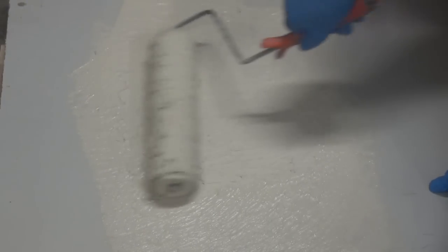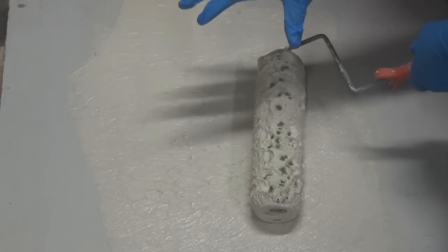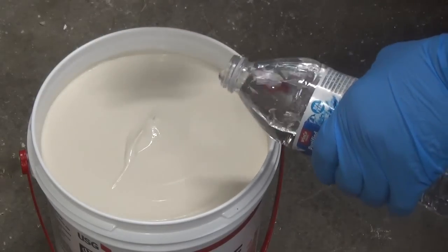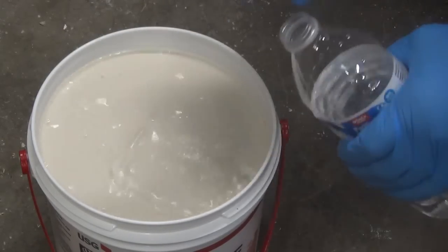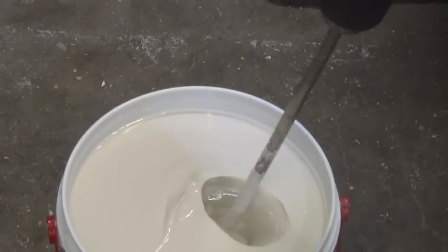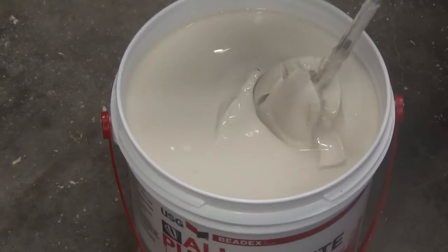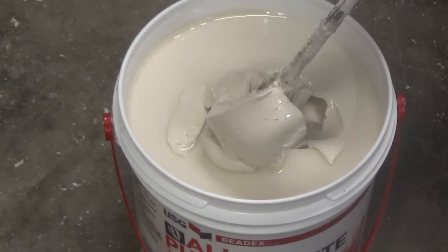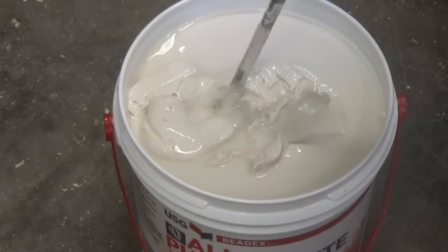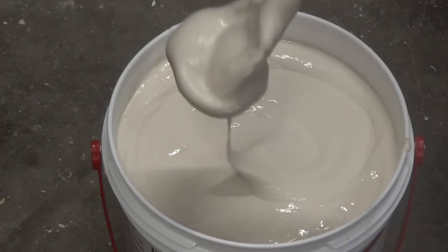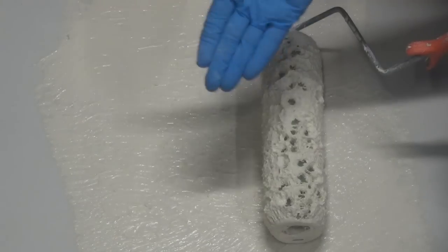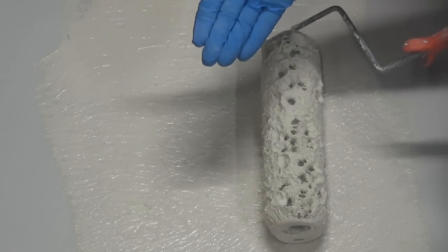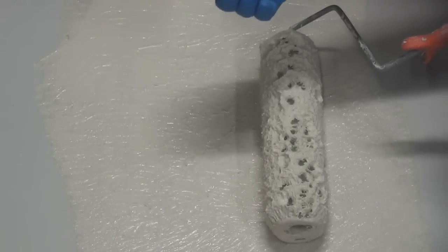Now depending upon how heavy you want the texture is how loosely or stiffly you mix the joint compound. Ours is just at an ideal mix. It's not too heavy, it's not too loose, it's going to produce some nice peaks. So let me continue to roll the joint compound on and then I'll use that texture roller.